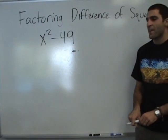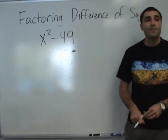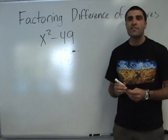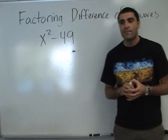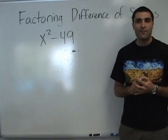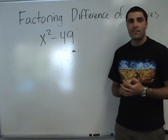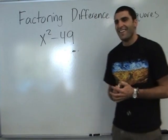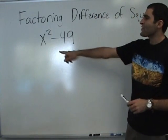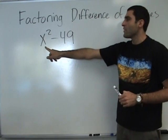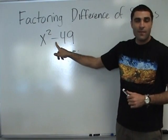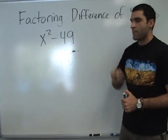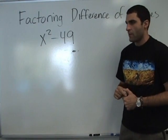Who can factor this difference of squares? Who recalls how to factor difference of squares? Anyone recall how to factor difference of squares? Not exactly. Okay. So the way to factor difference of squares is we look for a difference — a minus sign — and we look for both terms being perfect squares.